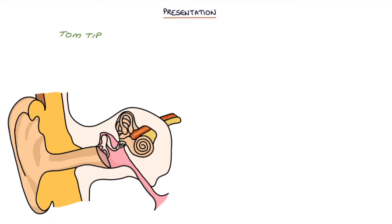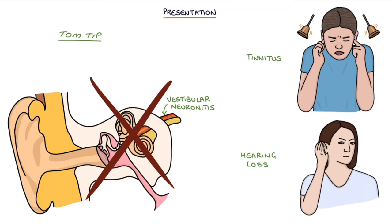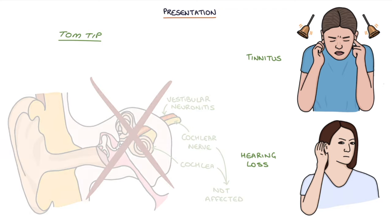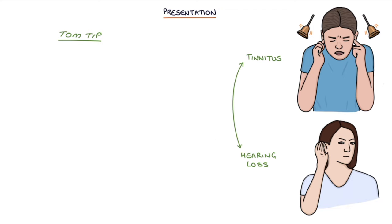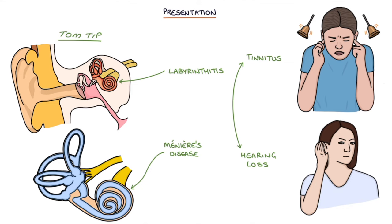A tip for you: tinnitus and hearing loss are not features of vestibular neuronitis, as the cochlea and cochlear nerve are not affected. If tinnitus and hearing loss are also present, consider labyrinthitis or Meniere's disease as a differential diagnosis. One easy way to remember the difference: labyrinthitis starts with an L for loss of hearing, and neuronitis starts with an N for no loss of hearing.